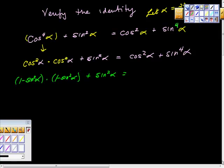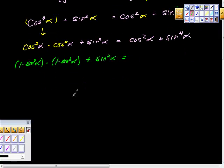Times 1 minus sine squared alpha plus sine squared alpha. Then this is what I'm going to do with this, and all of a sudden this is going to come together. Hopefully you're going to go, wow, that wasn't too bad.